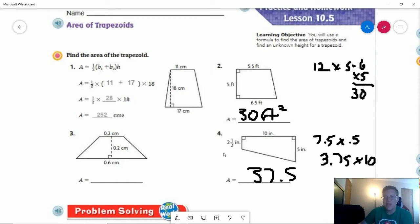Number 4, our bases are 2.5 plus 5 inches, giving us a total of 7.5 inches for our combined bases. We multiply that by 0.5 and get 3.75. Then we multiply by our height, which is 10 inches. That's as simple as moving a decimal point over, giving us 37.5 square inches.